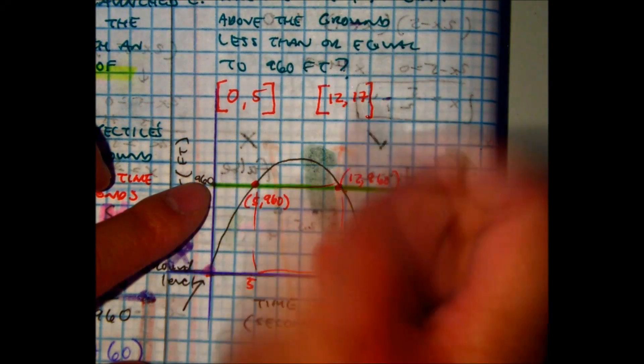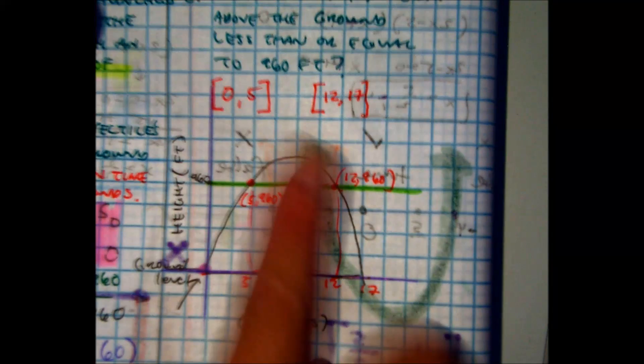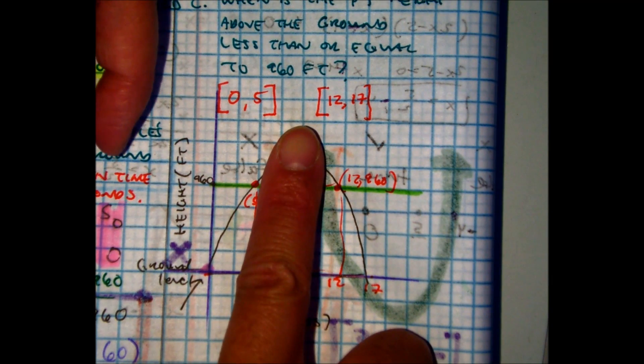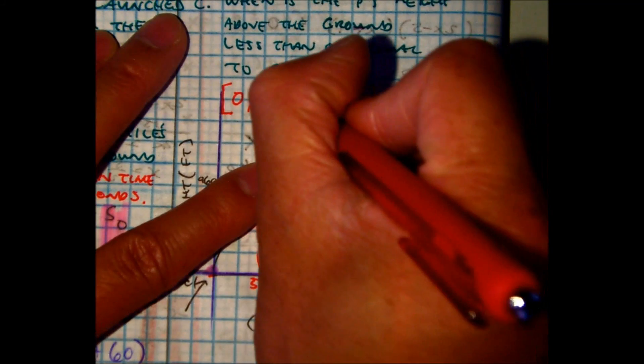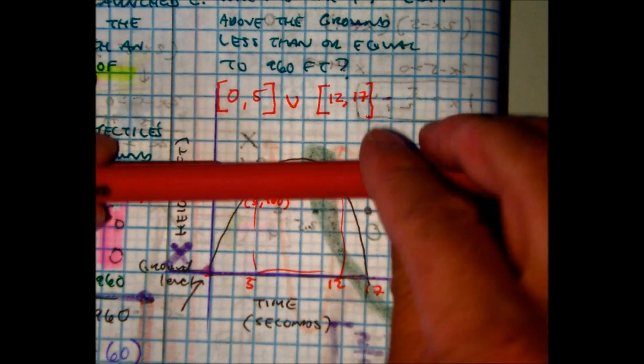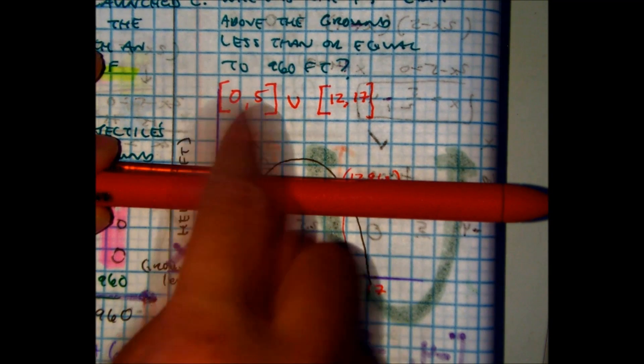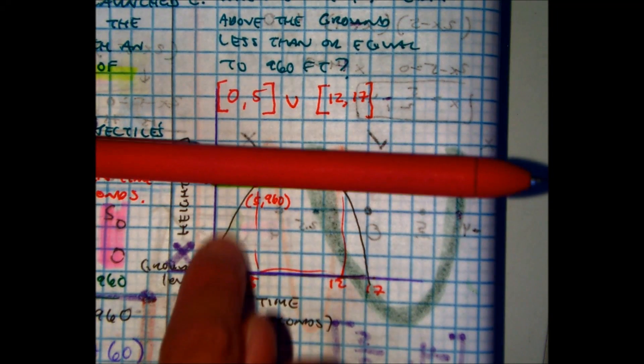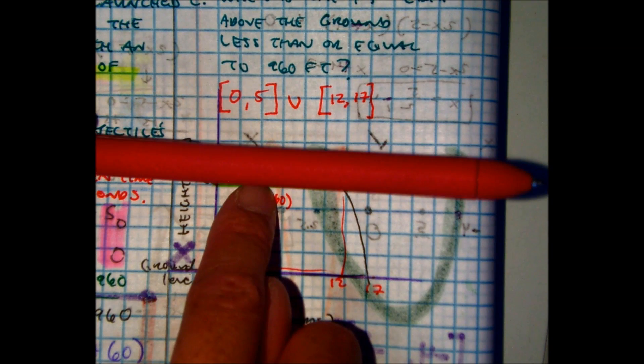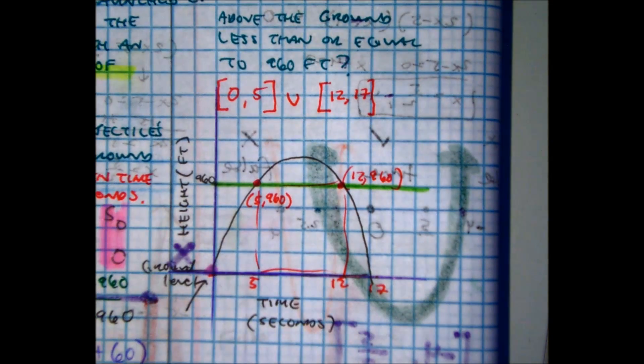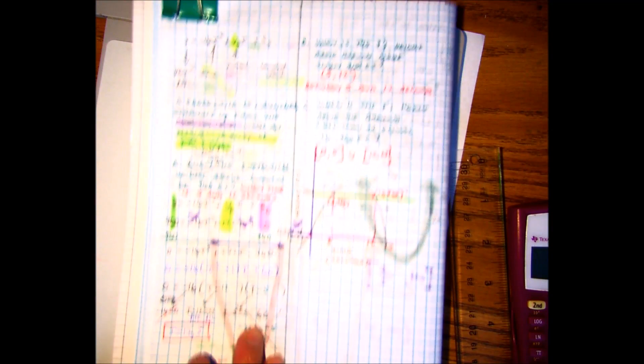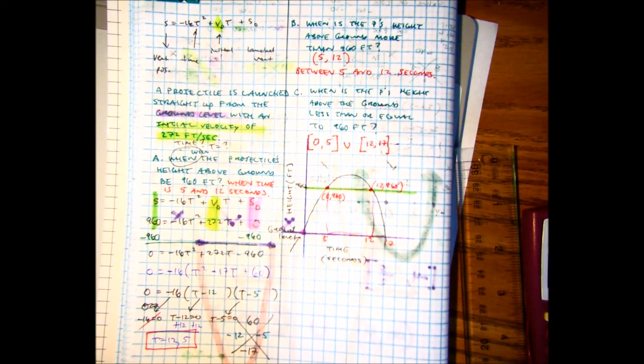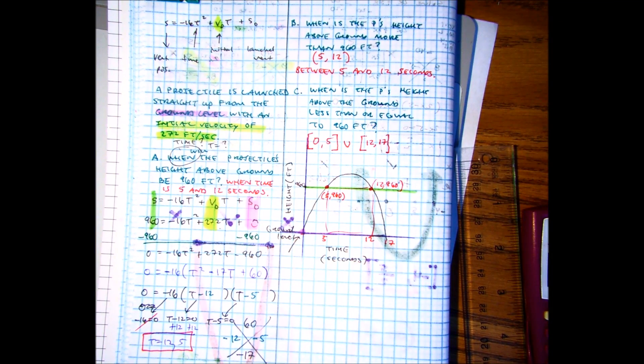And then in this problem where it says less than, just like we did yesterday's lesson, we're not including everything in between, right? I just want this time and this time, so we put union. What is it below 960 feet? Well, that's between times 0 and 5, and then 12 and 17. In this projectile motion problem, read it, draw yourself a picture, solve it using quadratics, and then use your picture to make sense of the problem.